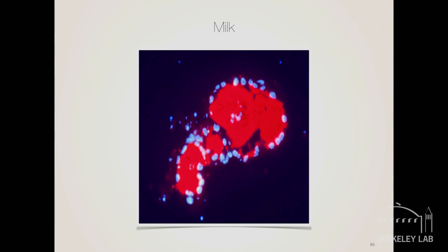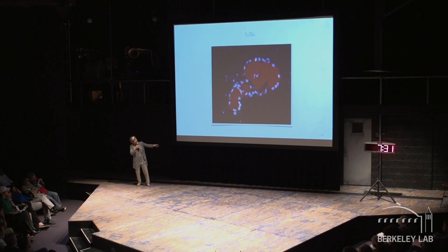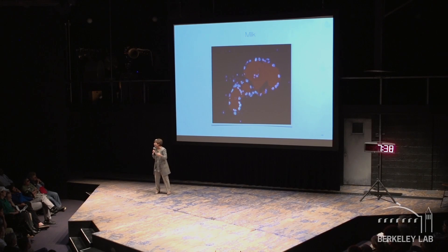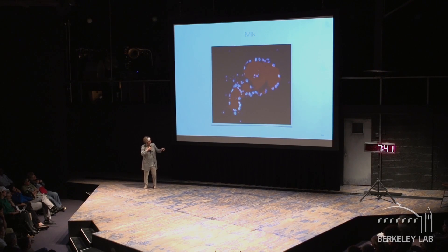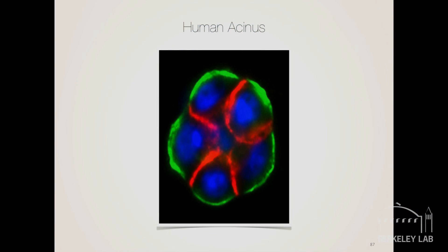Now we can make these gorgeous-looking structures full of milk inside this three-dimensional geometry. I had a picture of me at one of these big birthdays with a big mustache of milk saying, 'We got milk.' We can make these lovely structures of human or mouse breast and do all sorts of other things.